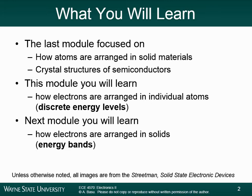Next module we're going to talk about how electrons are arranged in solid materials. In this module we're talking about how electrons are arranged in atoms that are not interacting with other atoms — you have one atom on its own, no influence of other atoms around it. In those cases, electrons form discrete energy levels. In the next module, we're going to talk about crystalline materials like silicon, which is surrounded by four other silicon atoms. Instead of discrete energy levels, we have these things called energy bands.